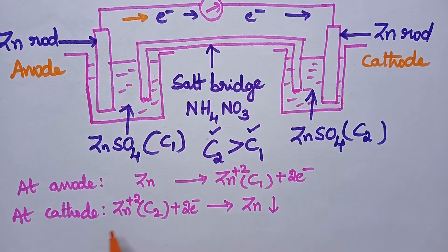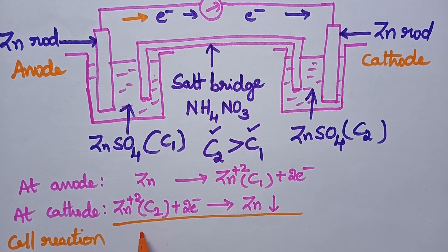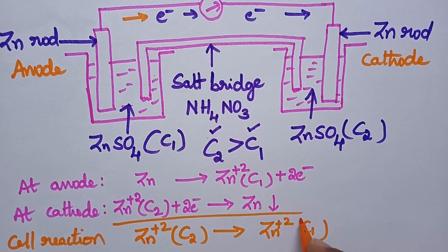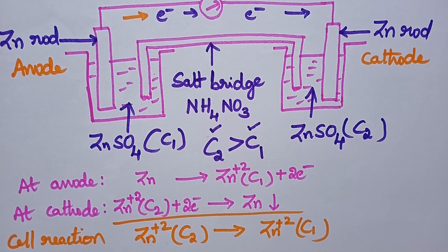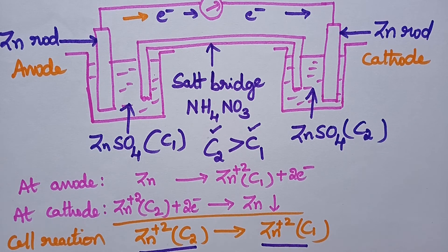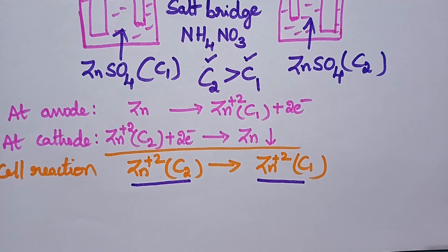So what is the net result? The cell reaction is: Zn²⁺ ions from the C2 solution will be converted into Zn²⁺ ions of C1 concentration. That means material will be transferred from the high concentrated solution to the low concentrated solution, and thus electricity will be developed.